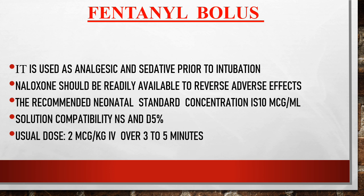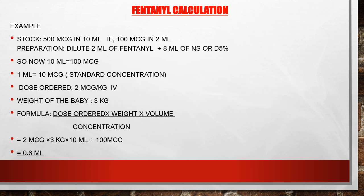The second drug is fentanyl bolus. It is used as an analgesic and sedative prior to intubation. Naloxone should be readily available to reverse adverse effects, as it is the antidote for fentanyl. The recommended neonatal standard concentration is 10 microgram/ml. Solution compatibility: normal saline and D5%. Usual dosage is 2 microgram/kg IV over 3 to 5 minutes. Stock: 500 microgram in 10 ml (that is 100 microgram in 2 ml). Dilute 2 ml of fentanyl plus 8 ml of normal saline or D5%, giving 10 ml containing 100 microgram — so 1 ml equals 10 microgram, the standard concentration.